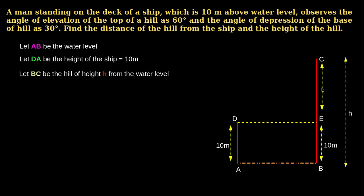The angle of elevation of the top of the hill from the observer on the deck of the ship, from point D, is 60 degrees. And the angle of depression of the base of the hill from the deck of the ship is 30 degrees. Let the distance between ship and hill, AB, equal X meters.